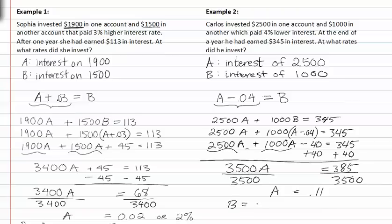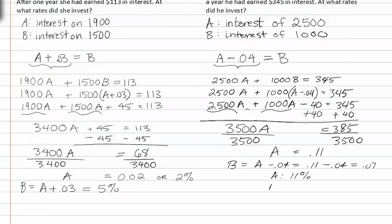If B is equal to A minus 0.04, because it's 4 percent, that's equivalent to 0.11 minus 0.04, which gives me 0.07. So the interest rate on the first amount is 11 percent, and the interest rate on the second amount is 7 percent.